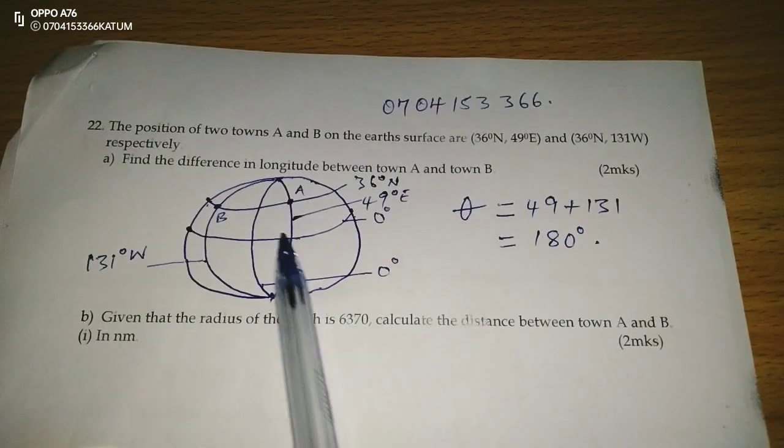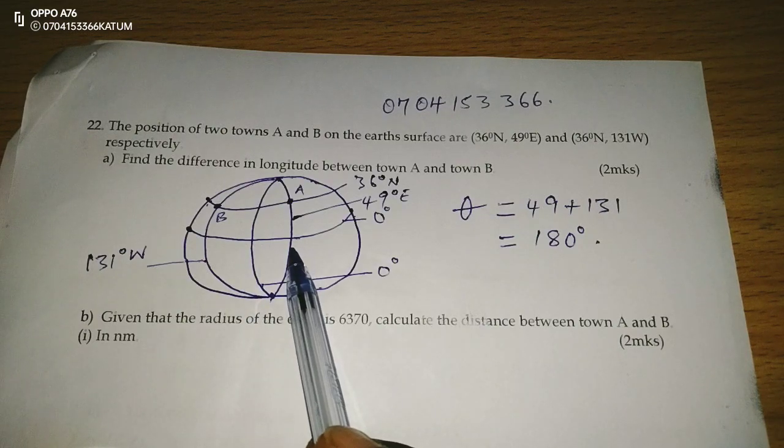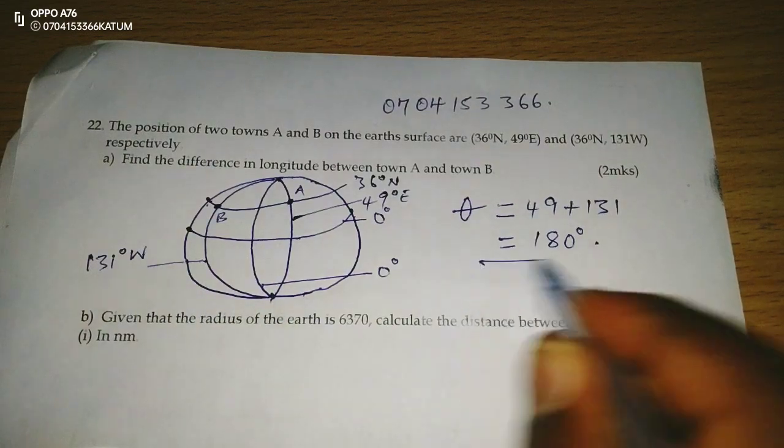Because they are on opposite sides of prime meridian. We are 49 to the east and 131 to the west, so we add to get the angle difference.